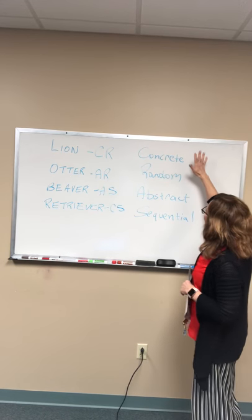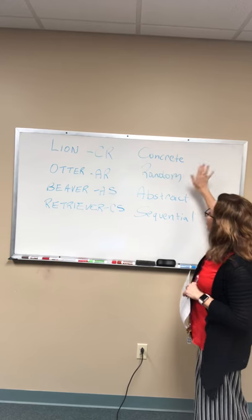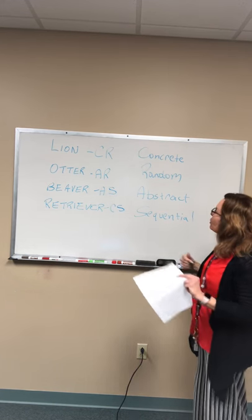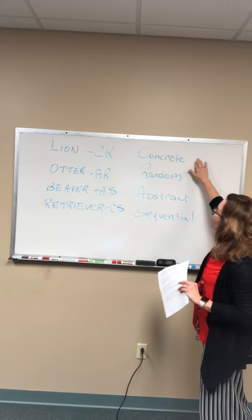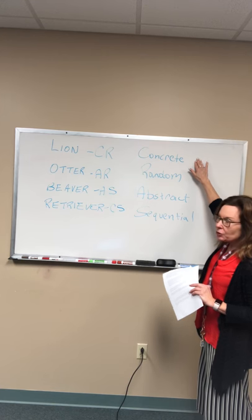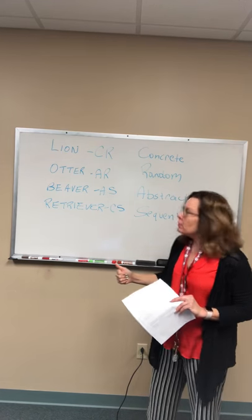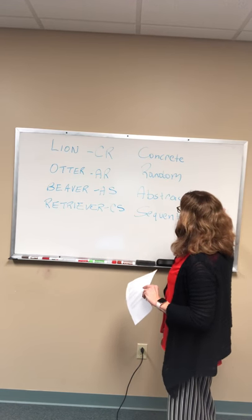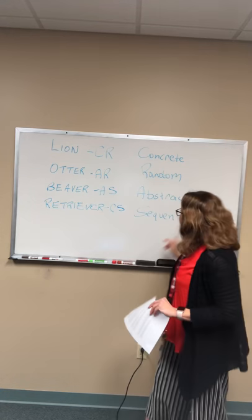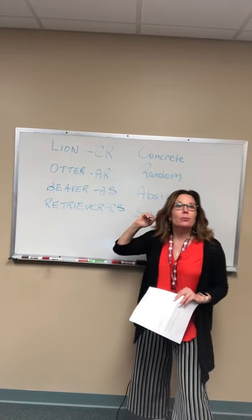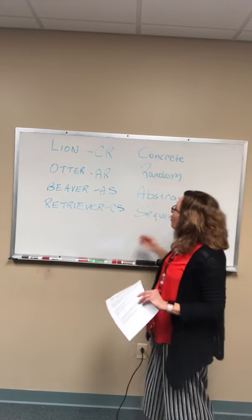This is based on the idea that people learn either concretely or abstractly, and either randomly or sequentially. They take in information in either a concrete or abstract way, and they do things in either a random or sequential way. A sequential person follows all the steps, while a random person might do step one, step three, step two, step five and still come to the answer, even skipping some steps.